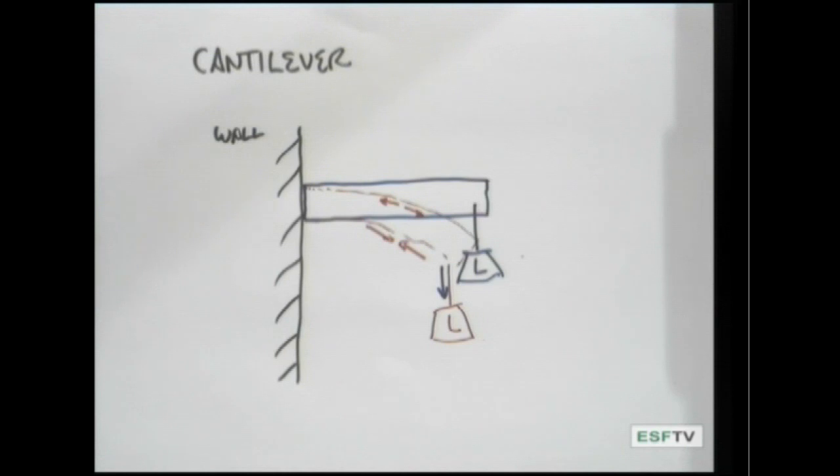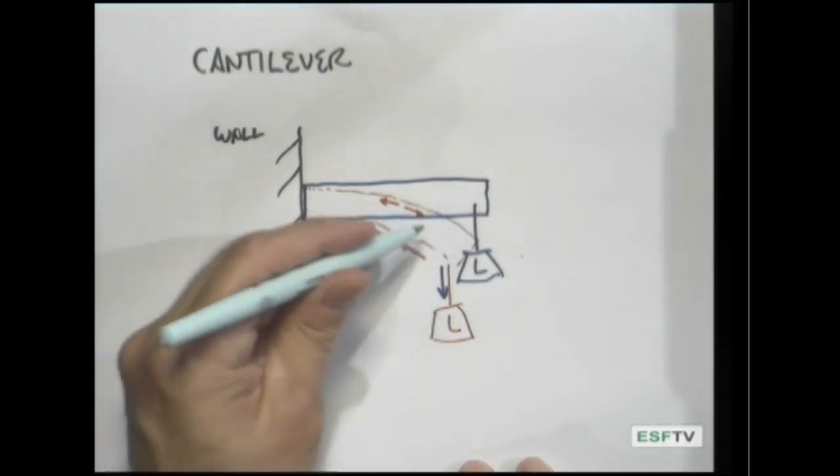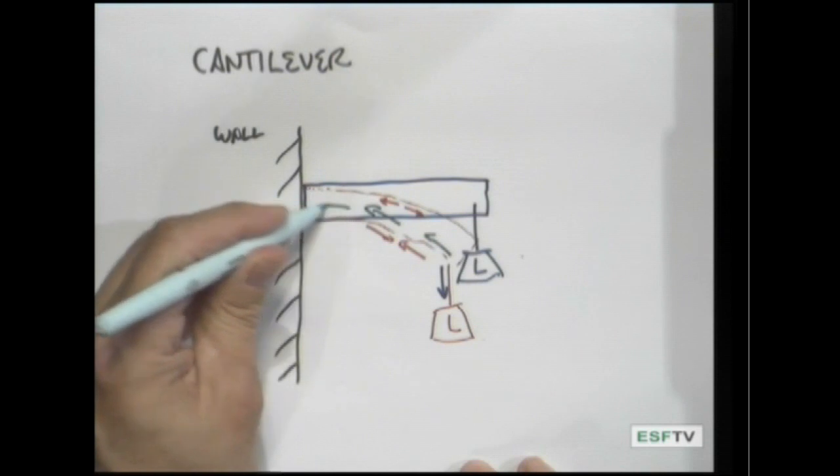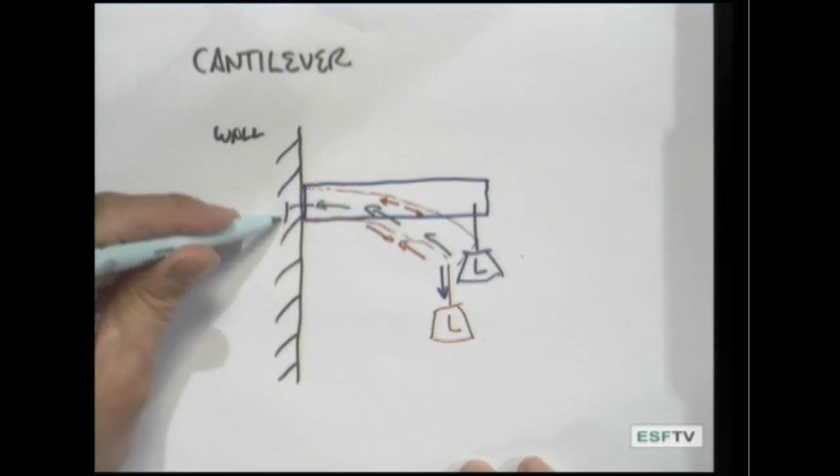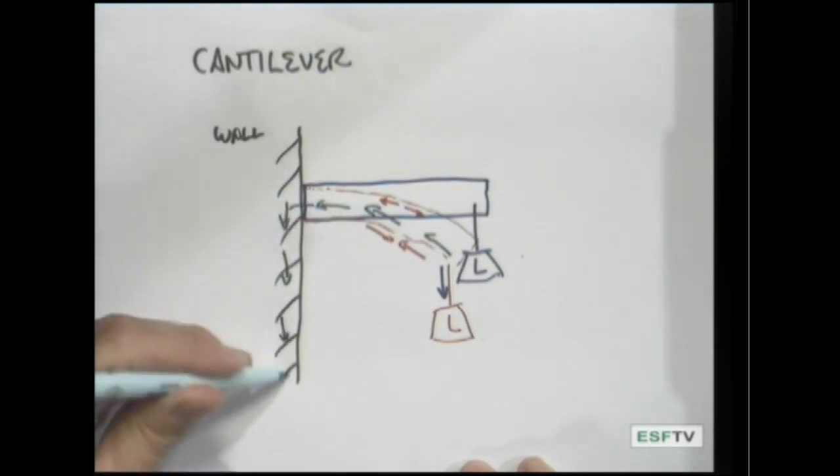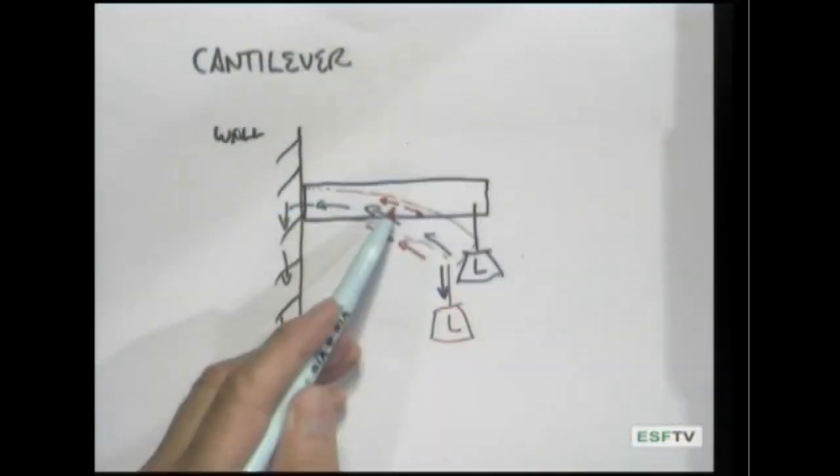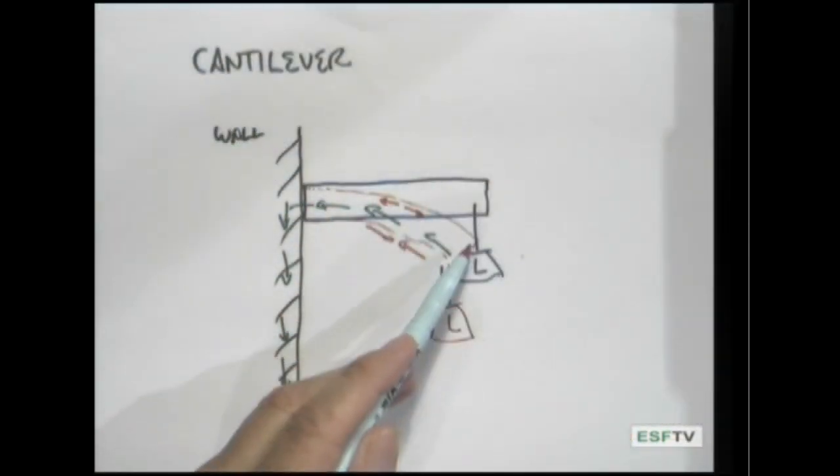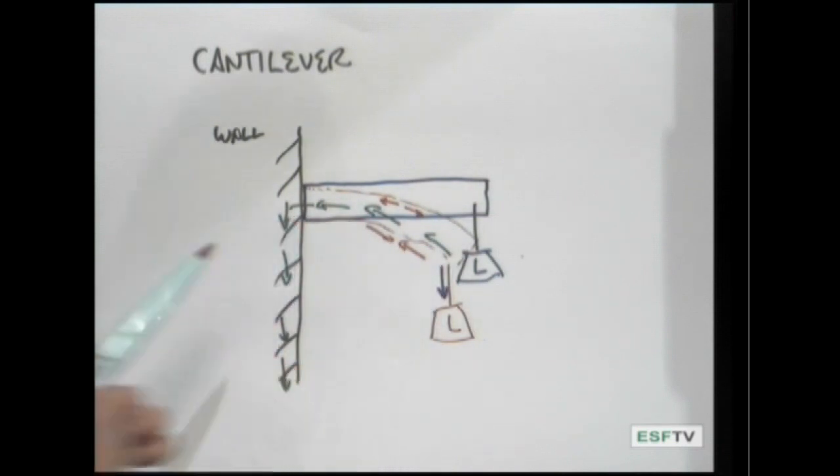And the genius of the cantilever is that it takes the load and redistributes it up by compression, and then down through the wall, down to some stronger support, say, the foundation of the building. So that's the simplest kind of cantilever. And the important point here, again, is to remember that the bending of the beam redistributes the load so that it is supported by tension here, but the force is redirected by compression through the bottom part of the beam, and then redirected through the wall down to the ground.